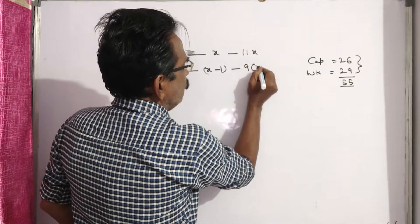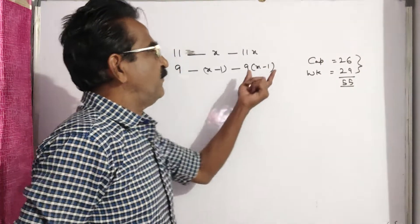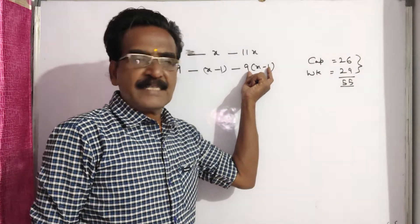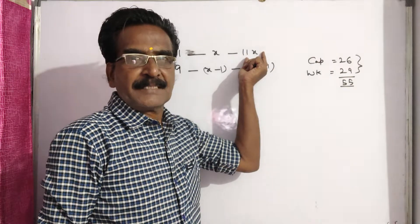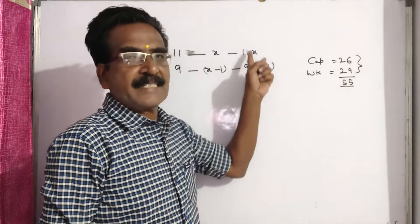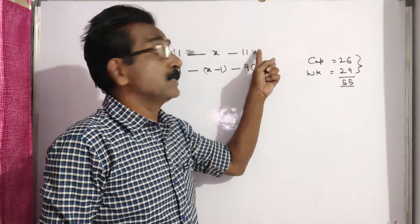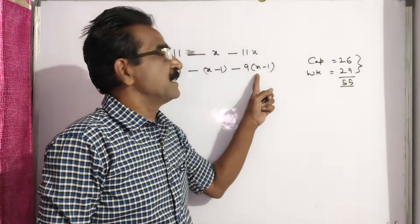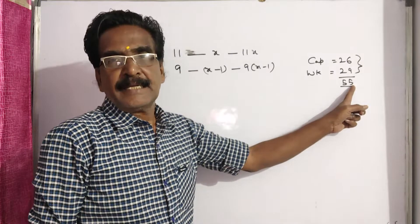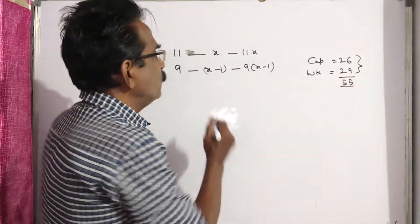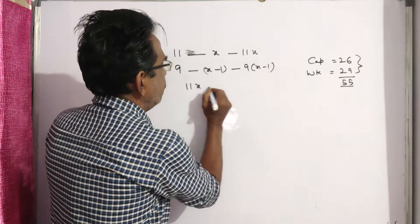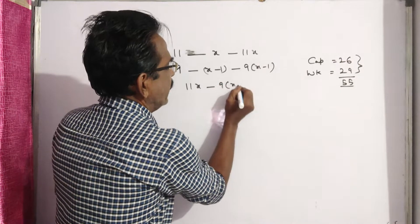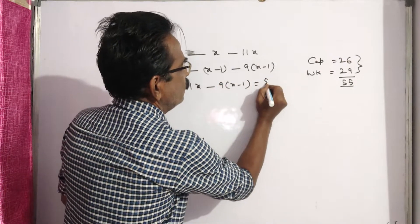So, the total age of 9 members is this. The total age of 11 members is this. This minus this is the sum of 11 members. This is the sum of 9 members. So, this minus this will give you the sum of the 2. So, 11X minus 9 into X minus 1 is equal to 55.